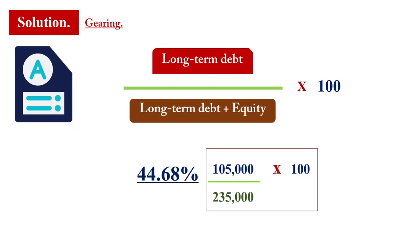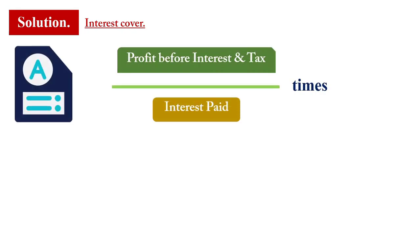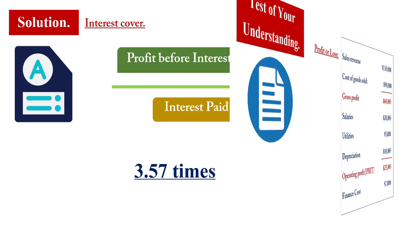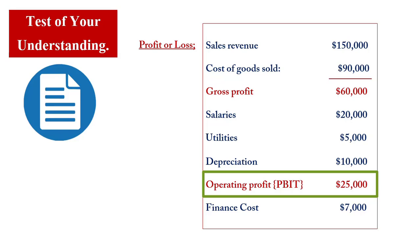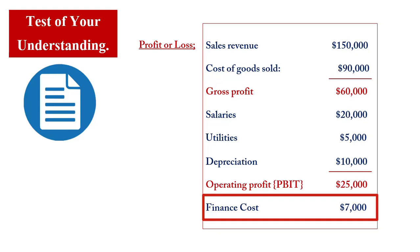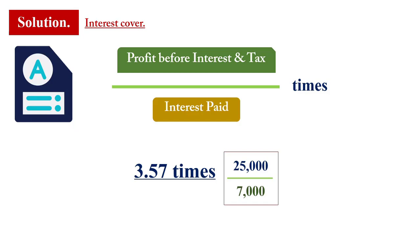This means the non-current liabilities (long-term debt) represent approximately 45% of the total funds holding the business. For interest cover: profit before interest and tax of 25,000 divided by finance cost (interest) of 7,000 gives 3.57 times. This means the profits from core operations can pay off the interest due on the debt approximately four times. So if the business operates for one year, the operating profit generated could still cover its fixed legal obligations for approximately the next three years.